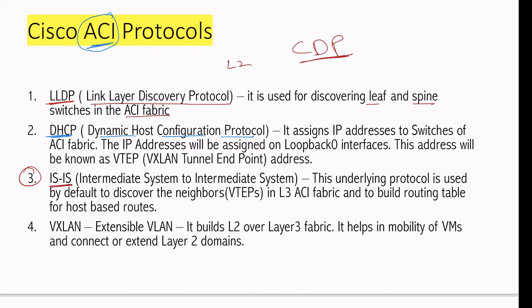The third: IS-IS. Since this is a layer 3 fabric, we need to discover the devices at layer 3 so that devices can become neighbors, and we also need to build the routing table because we have to reach each leaf and spine. That will only happen if we have a routing protocol. So IS-IS is the routing protocol we are using. Intermediate System to Intermediate System. This is an underlying protocol; we don't have to enable it.